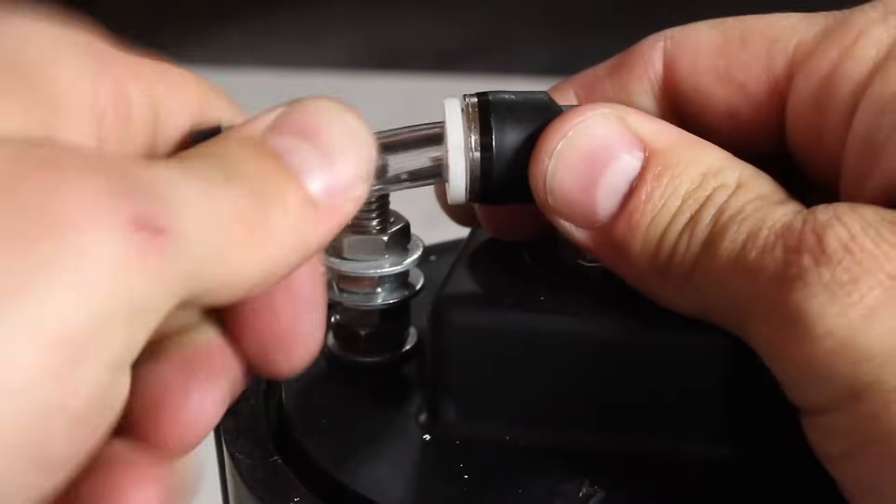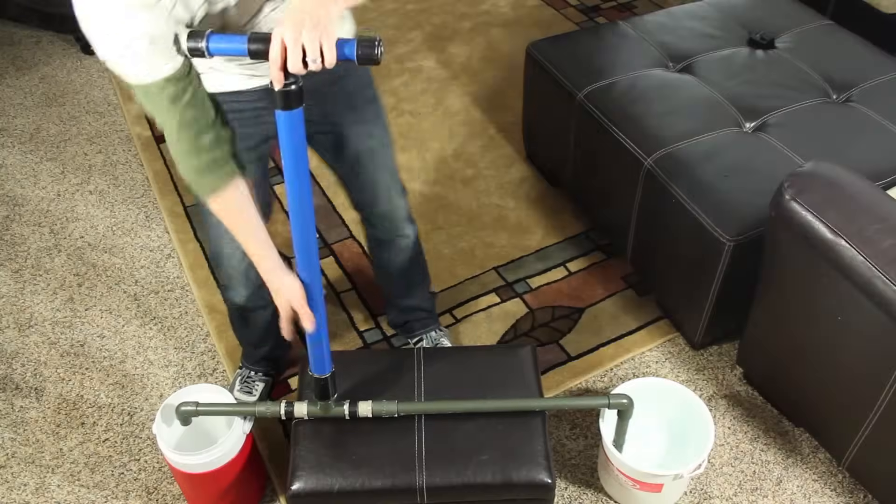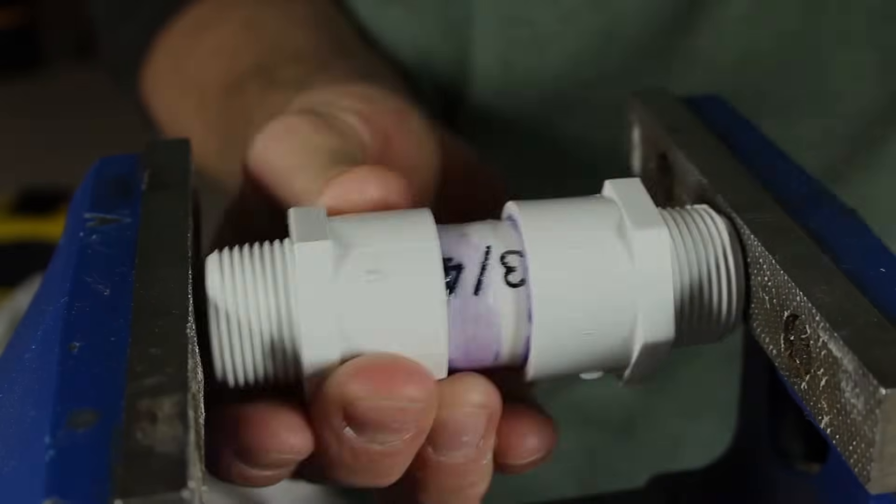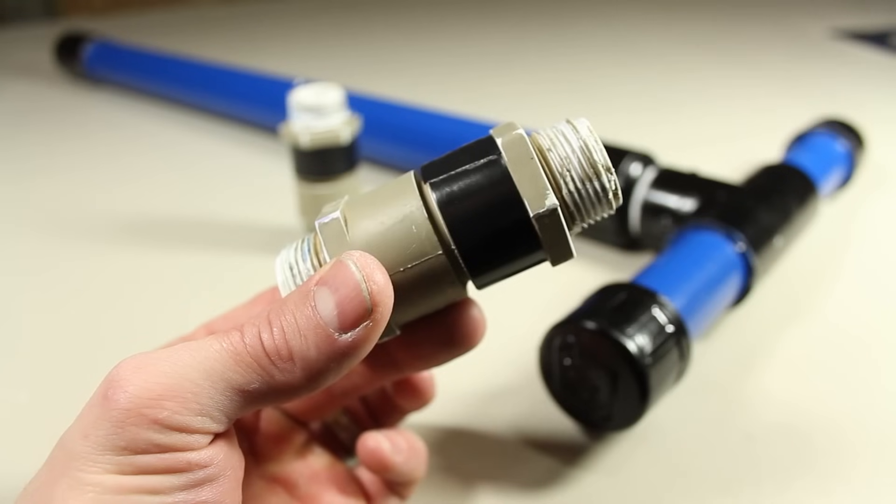A check valve is an amazing little device that lets a liquid or gas flow one way only. We'll need some to make a low cost water pump, but buying them can be a little pricey. So in this project we'll be making our own out of common materials for less than a dollar.